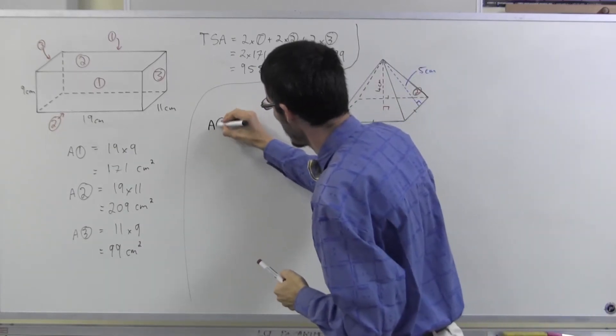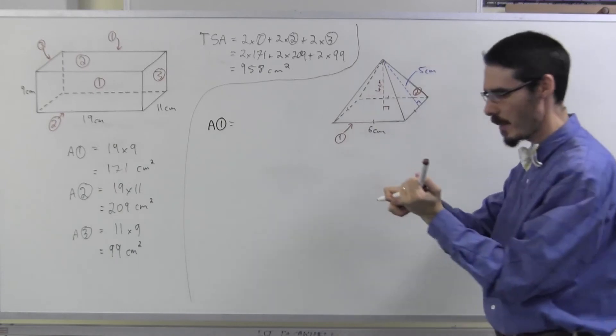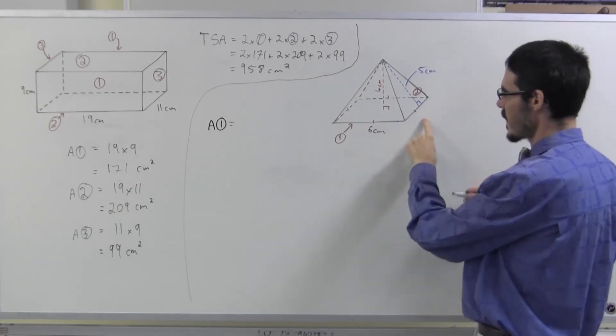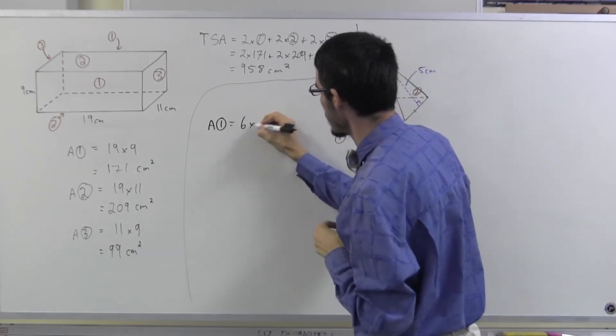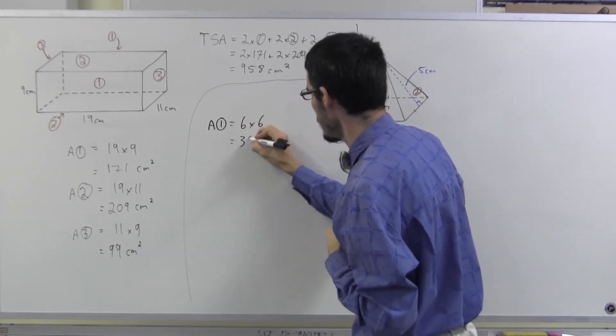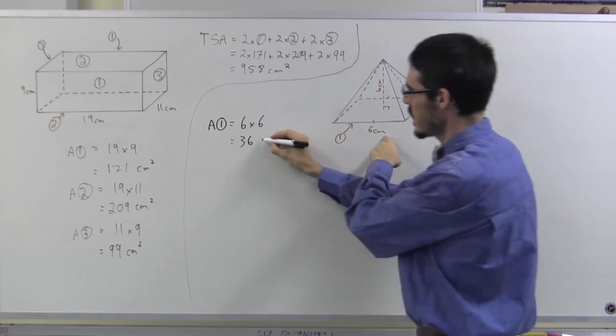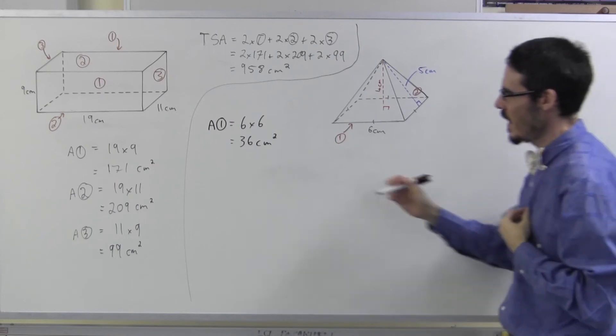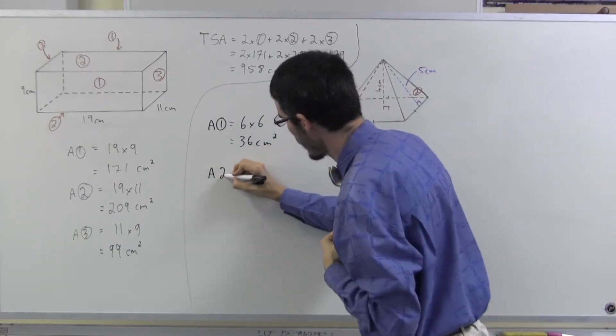So let's have a look. Area one. Well, that's definitely a better black pen, isn't it? Area one is just going to be side times side, six times six, which is 36 square centimeters. Easy.